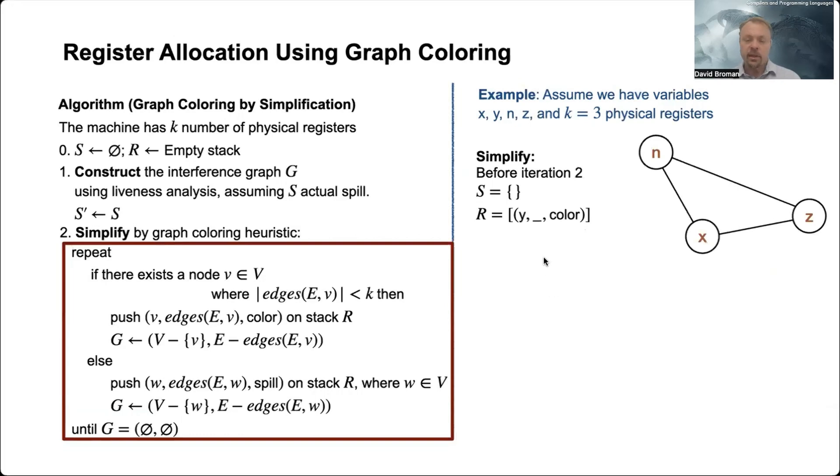Then the next step is we have this graph. And now we should again pick a node where the number of edges are less than k. And you see that the number of edges of all of them are just two here, so we can pick any of them. So let's pick x here in this case. And then we still have no spilling, and we push on the stack.